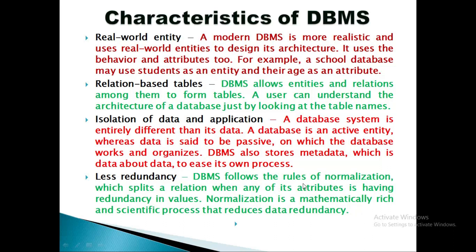Less Redundancy. DBMS follows the rules of normalization, which we will study in future lectures. Minimal redundancy remains in DBMS because it splits a relation when any of its attributes has redundancy in values. Wherever there is duplicacy or redundancy in values, normalization splits that relation. Normalization is a mathematically rich and scientific process that reduces data redundancy — also called data duplicacy. Through this mathematical technique, our data remains minimally duplicate and minimally redundant. So the four characteristics so far are: Real World Entity, Relation-based Tables, Isolation of Data and Application, and Less Redundancy.